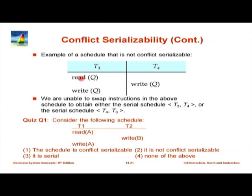Here is an example that is not serializable. T3 does read Q and write Q; T4 does write Q. Can you move T4's write Q above T3's read Q? No — they both access Q and one is a write, so they conflict; swapping would change what T3 reads. Can you move T3's write Q below T4's write Q? No — both are writes on the same variable and swapping changes the final value of Q. You cannot swap any operations, so this schedule is not equivalent to any serial schedule. It is a bad schedule.